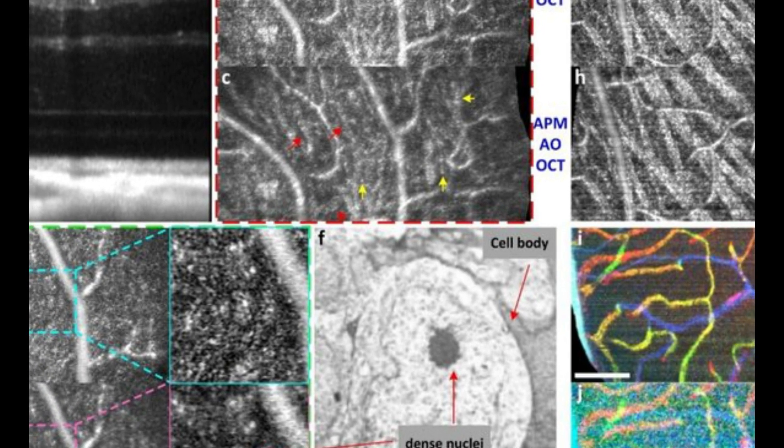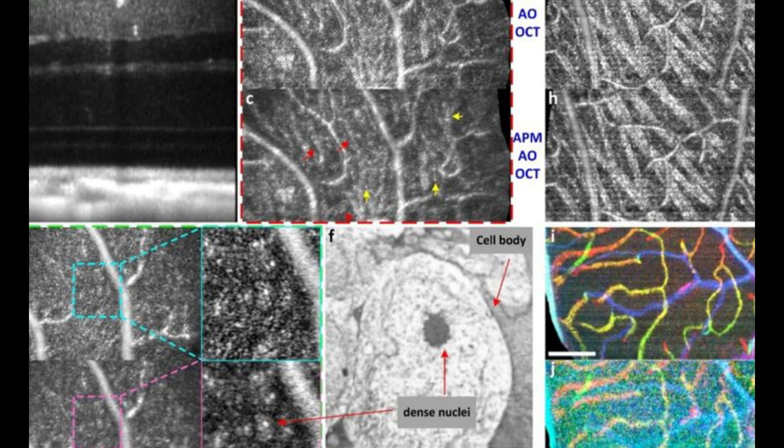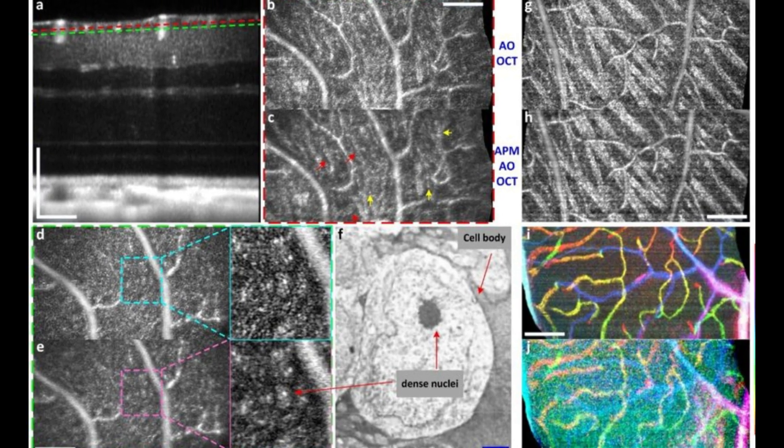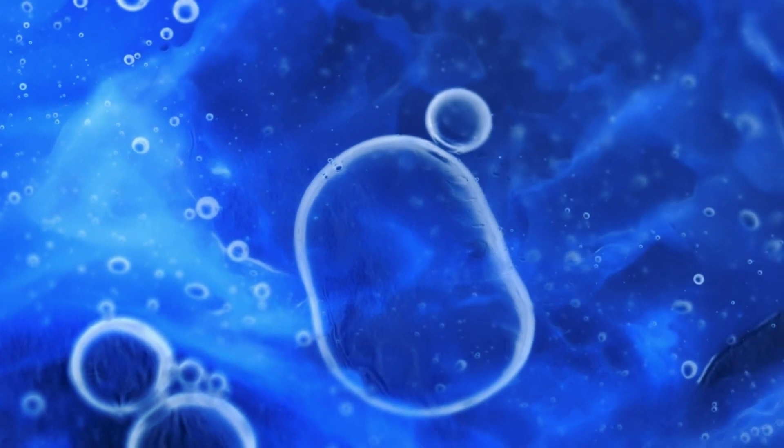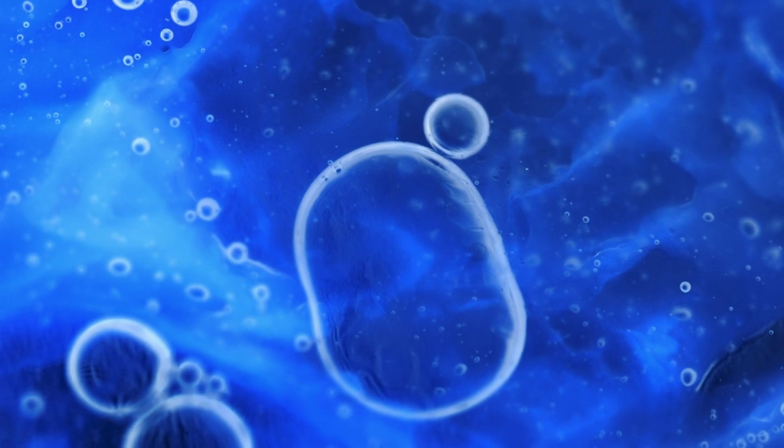Within these microscopic entities, intricate processes such as metabolism, DNA replication, and protein synthesis unfold. The cellular scale is where life's building blocks come together to create the astonishing diversity of organisms that populate our planet.